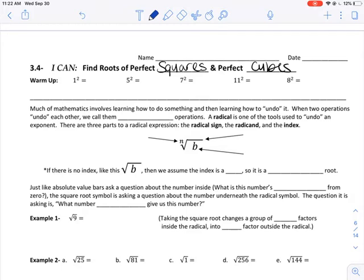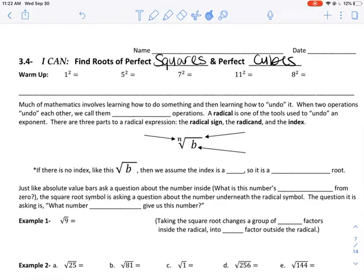I'm going to read down here. Much of mathematics involves learning how to do something and then learning how to undo it. When two operations undo each other, we call them inverse operations. You might remember addition and subtraction are inverses, multiplication and division are inverses.